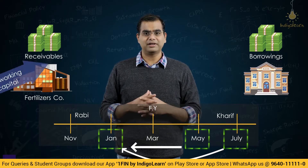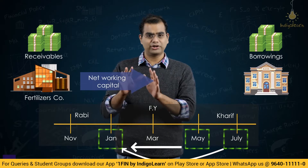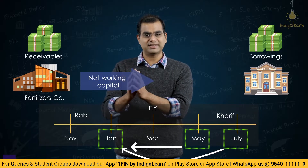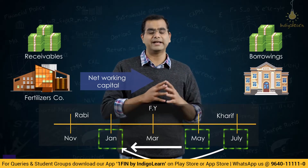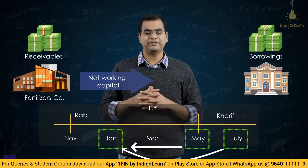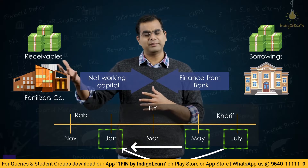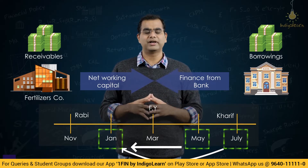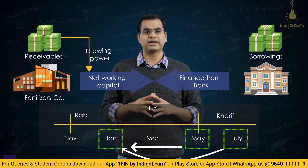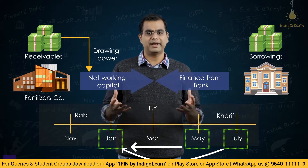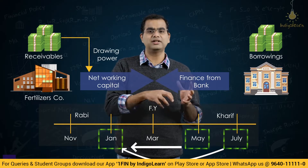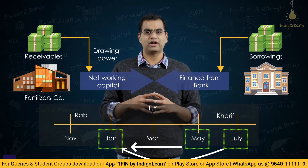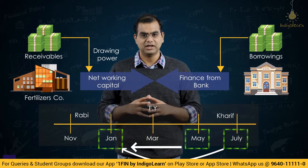This is the working capital finance concept discussed in FM — the net working capital gap, based on which you go and get bank finance. My company, like many other fertilizer companies, used to show this as working capital drawing power. They had working capital limits with many banks, computed a drawing power, and borrowed loans against that drawing power to finance the receivables.